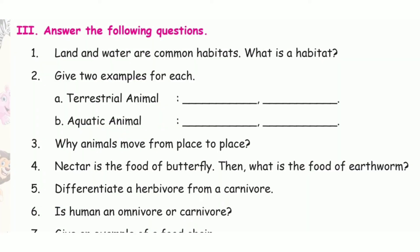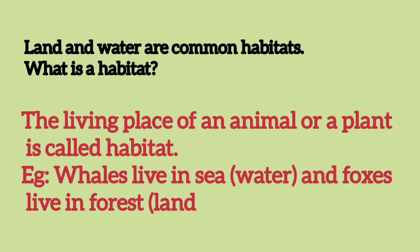Answer the following questions. First question: land and water are common habitats. What is a habitat? The living place of an animal or a plant is called a habitat. Example: whales live in the sea and foxes live in the forest.